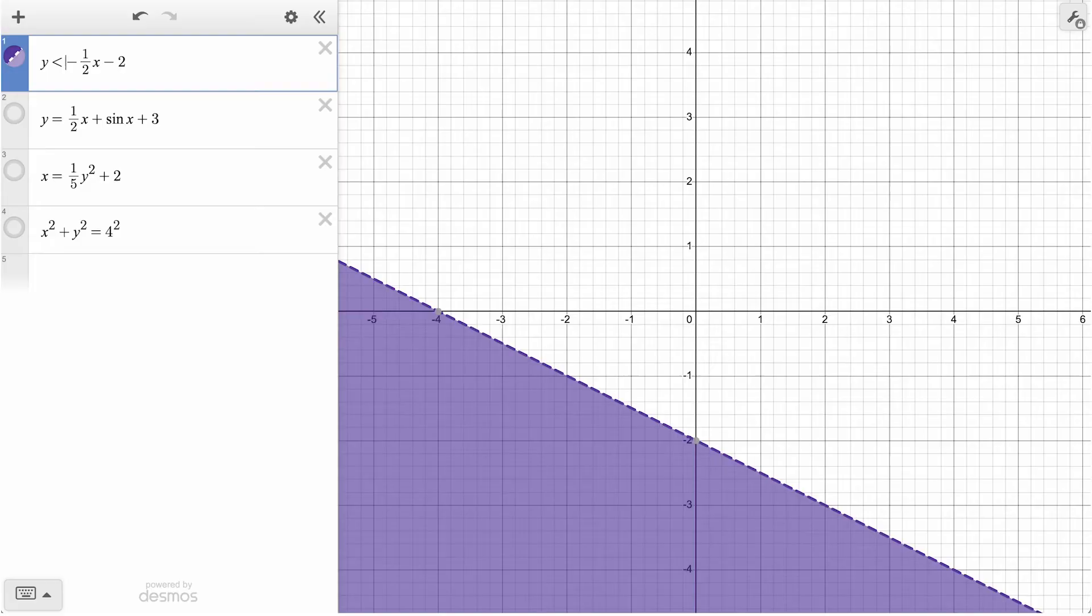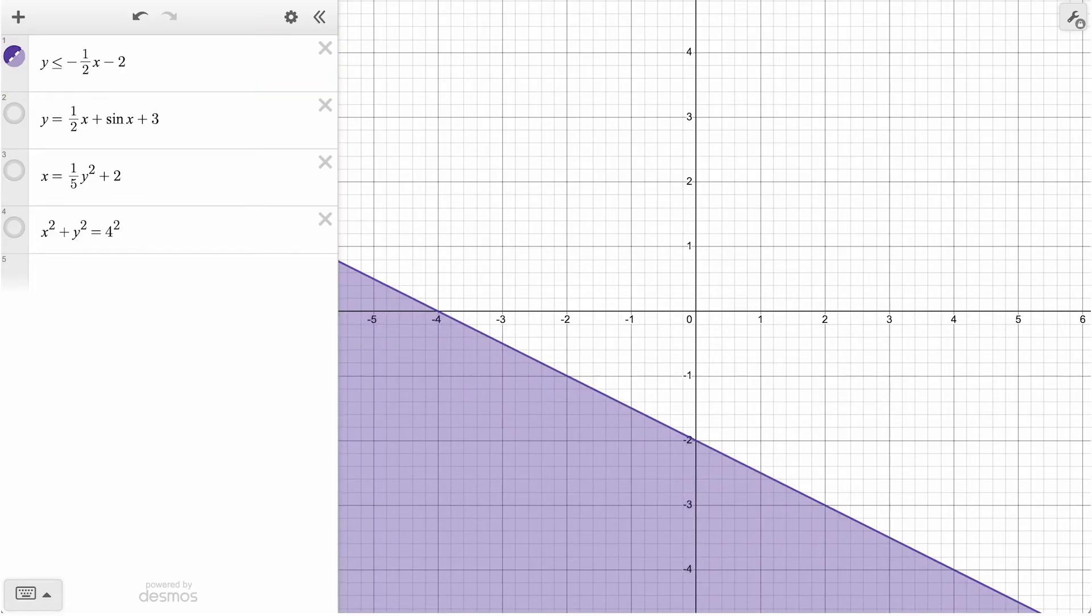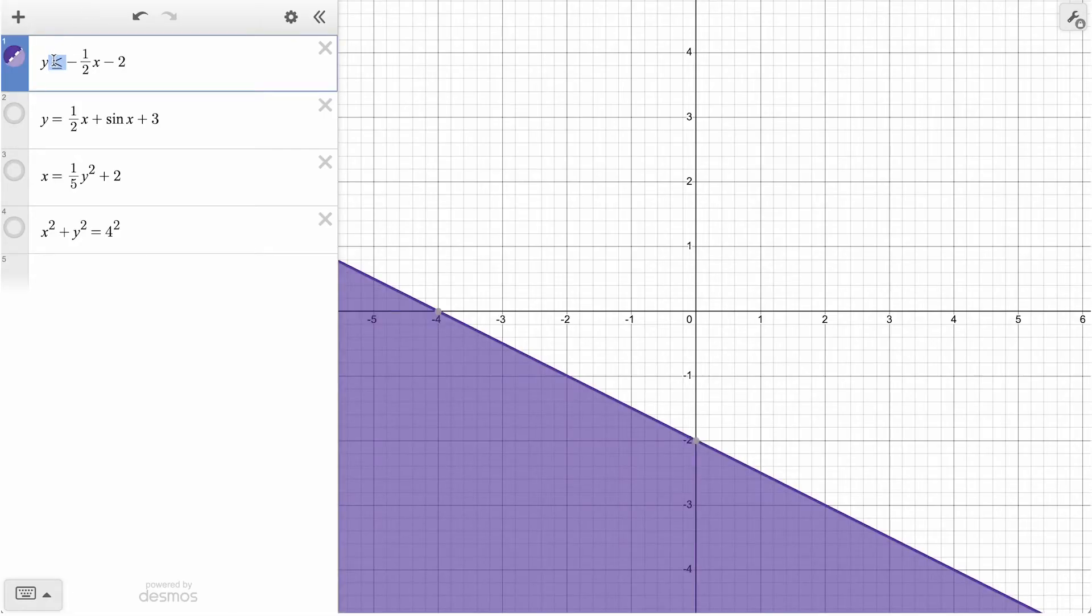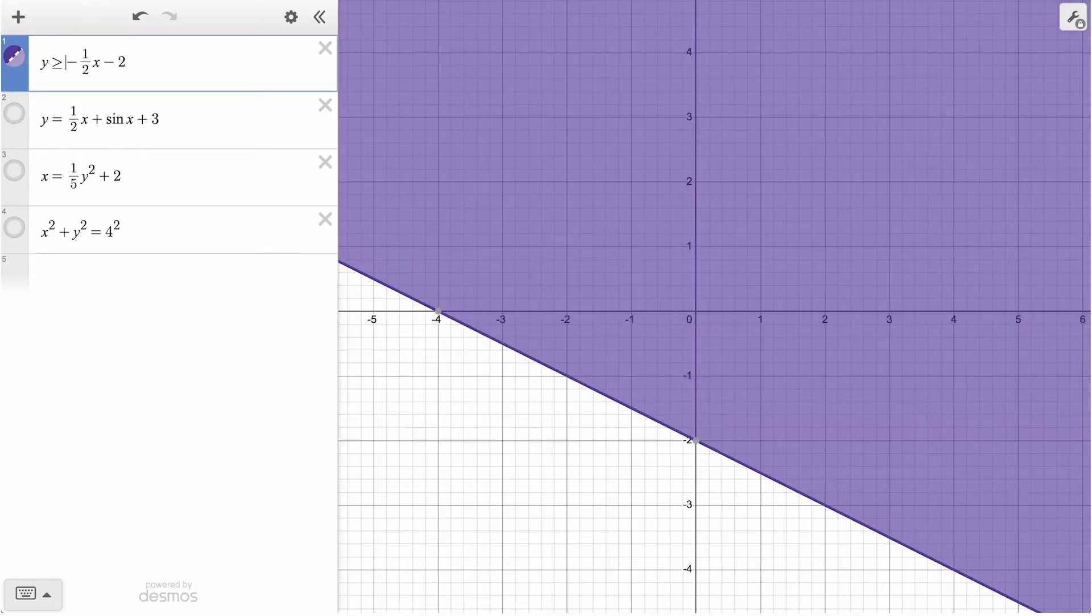The dotted line is used for less than, but if we change it to less than or equal to, the line turns solid, just by typing equals when your cursor is placed after the less than symbol. We can also shade above this expression by using a greater than symbol.